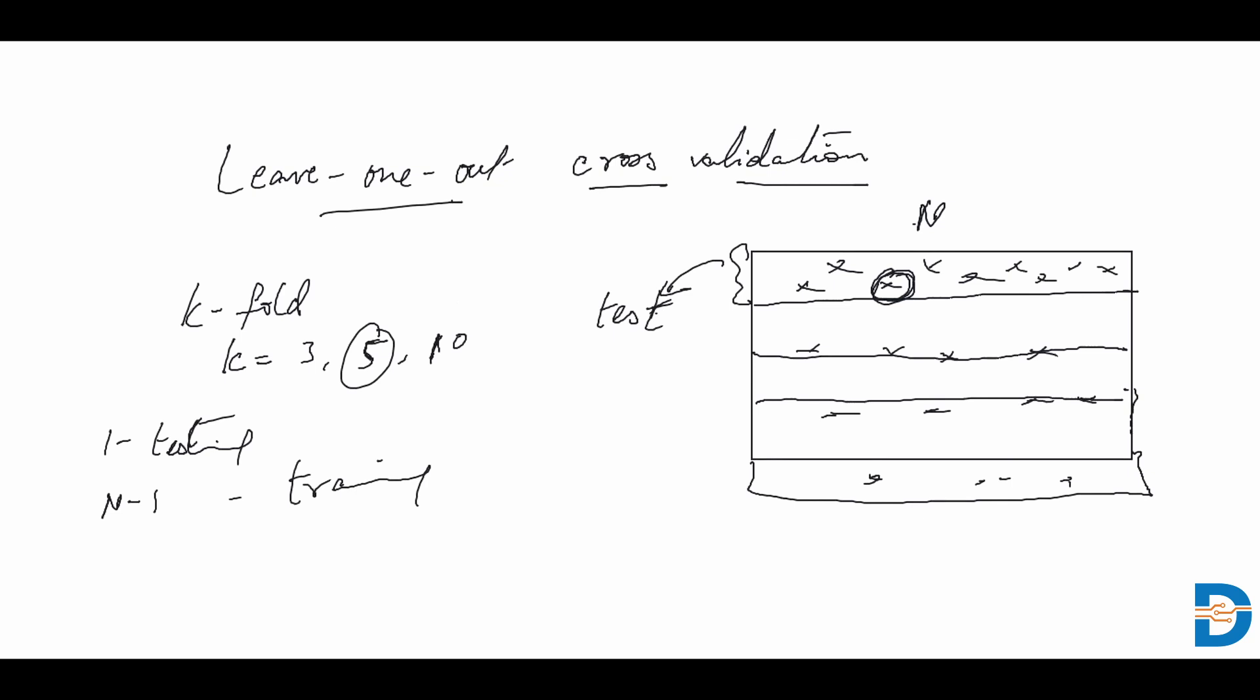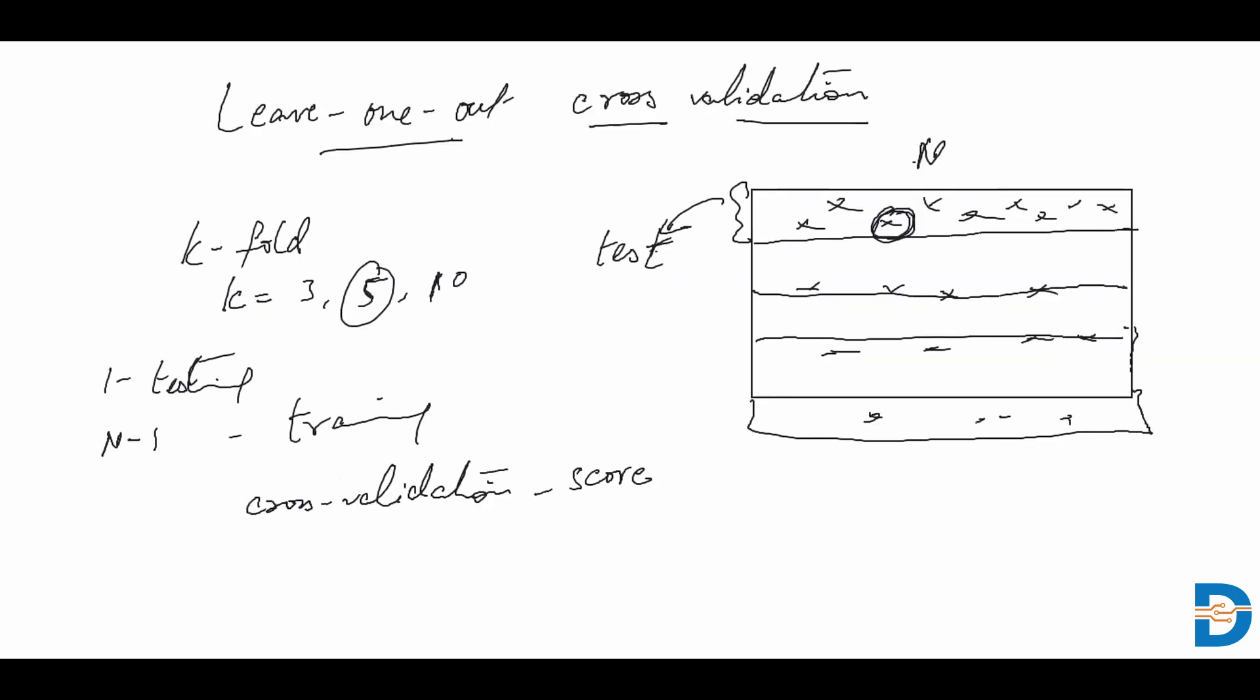Eventually, you'll take a look at the cross-validation score if you end up using leave-one-out. The cross-validation score will take the mean of all these 5,000 models that are created, the mean score, and get our best model possible.